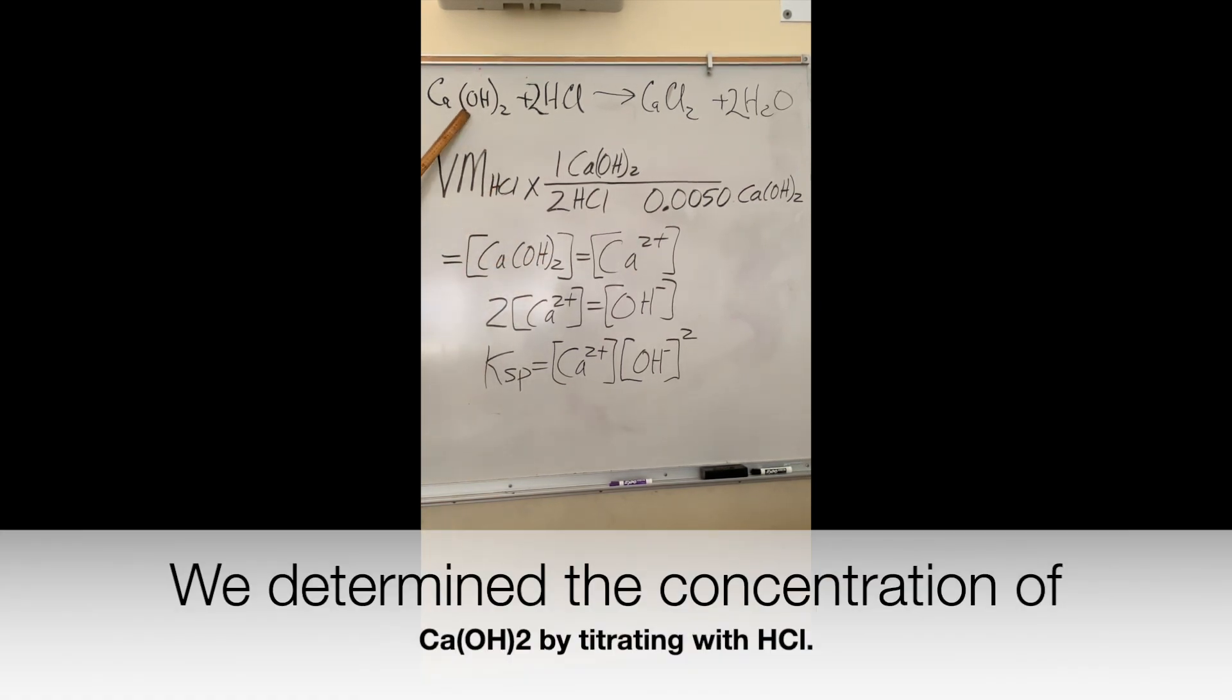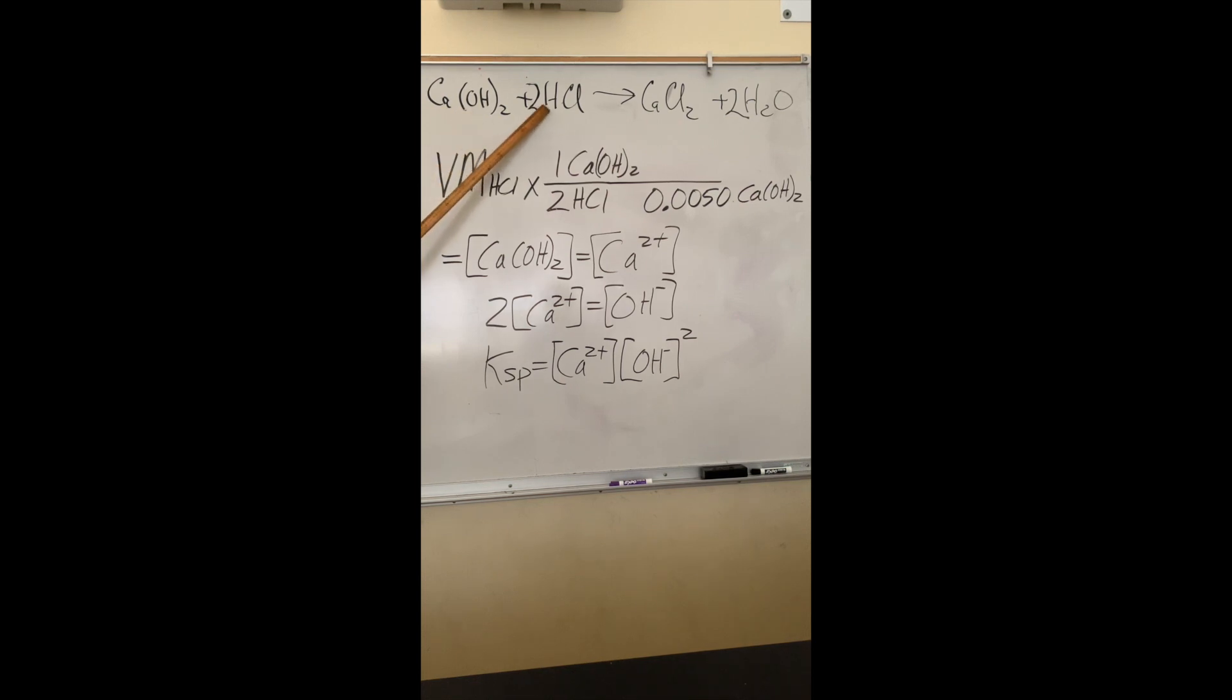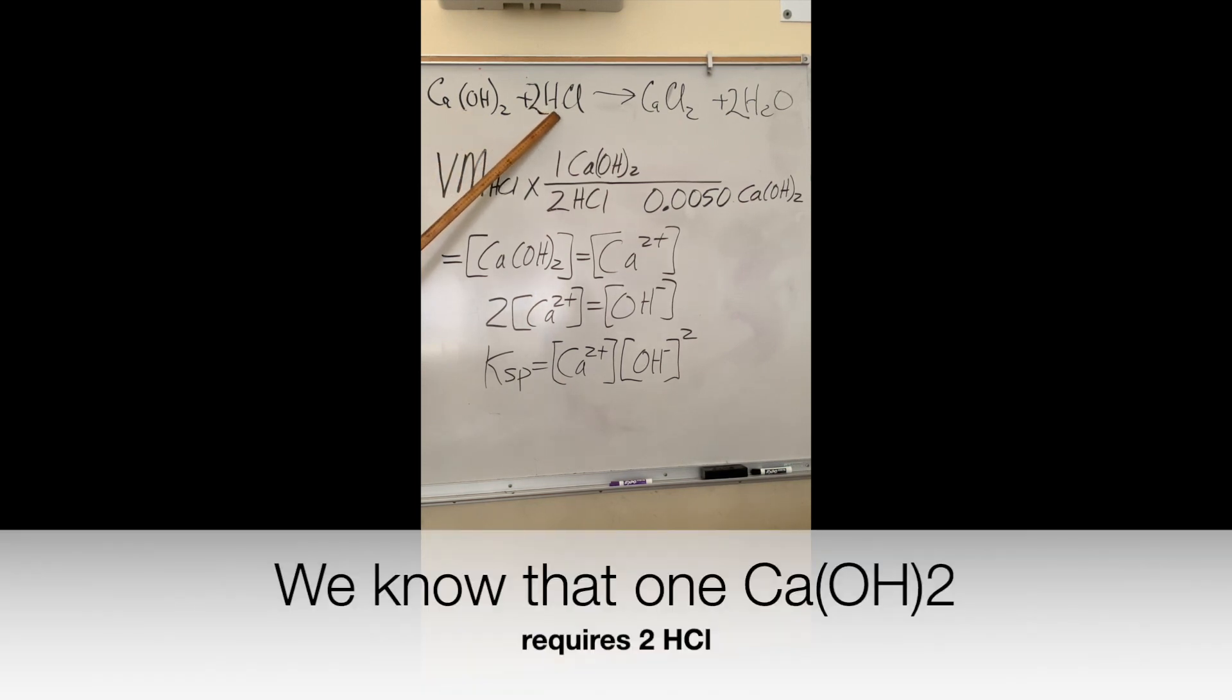We've just determined the concentration of calcium hydroxide by titrating with HCl. We know that one calcium hydroxide requires two HCl to neutralize it.